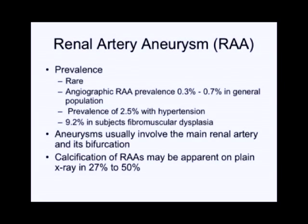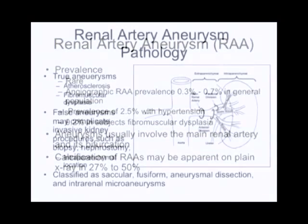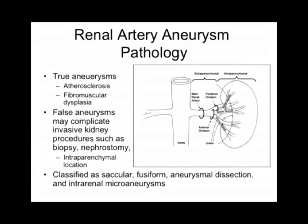Renal artery aneurysms are rare. Angiographic prevalence is less than 1% in the general population, and about 2.5% in those with hypertension. More commonly, they're found in patients with fibromuscular dysplasia. Aneurysms usually involve the main renal artery and its bifurcation. Calcification is often apparent on plain film in about a quarter to a half of patients. Most renal artery aneurysms are true aneurysms, associated with atherosclerotic or degenerative disease, though fibromuscular dysplasia is actually the most common associated condition with true aneurysms, typically involving the distal portions of the main renal artery or the point of division.